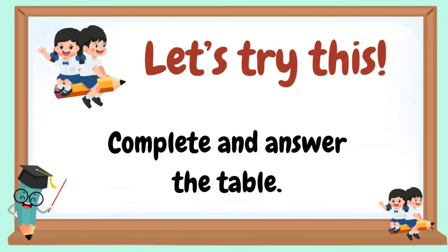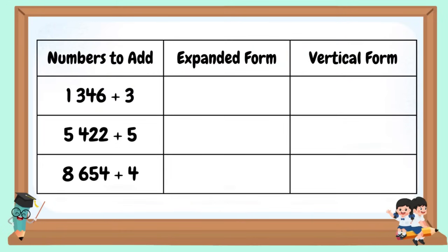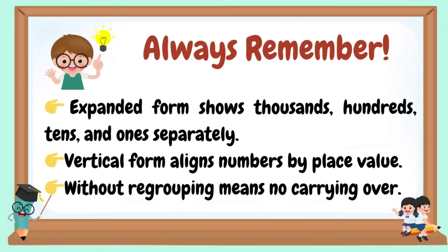Let's try this: Complete and answer the table. Always remember: Expanded form shows thousands, hundreds, tens, and ones separately. Vertical form aligns numbers by place value. Without regrouping means no carrying over.